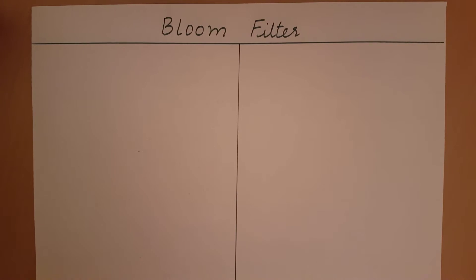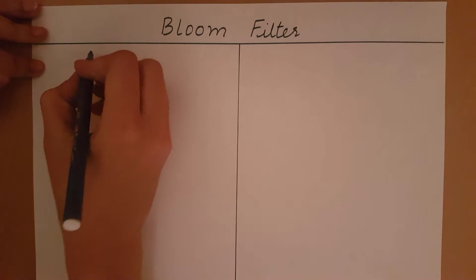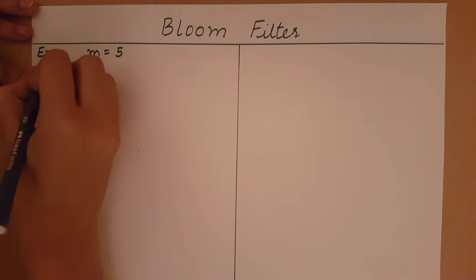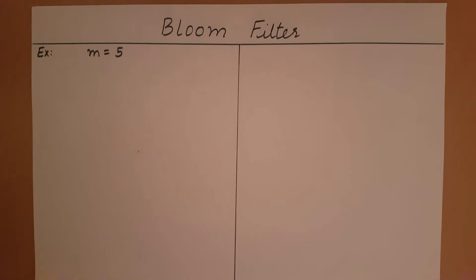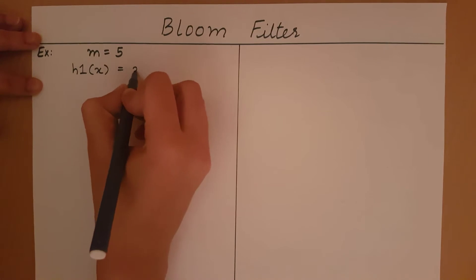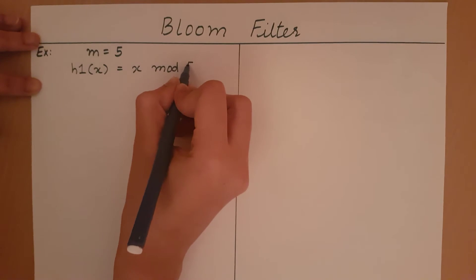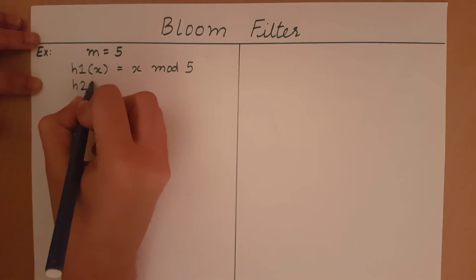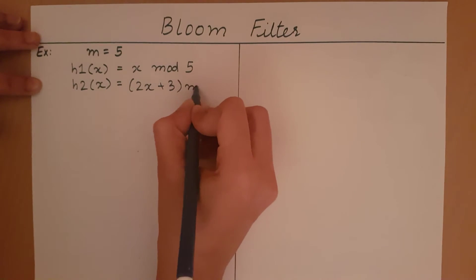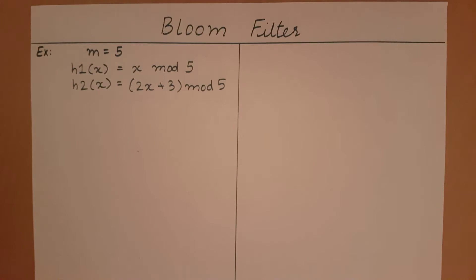The size of the bloom filter is given and stored in m. Let's say m is equal to 5 for this example. Now we define two hash functions: hash1(x) = x mod 5, and h2(x) = (2x + 3) mod 5. Now that we have these three things defined, let's start inserting elements into our set.